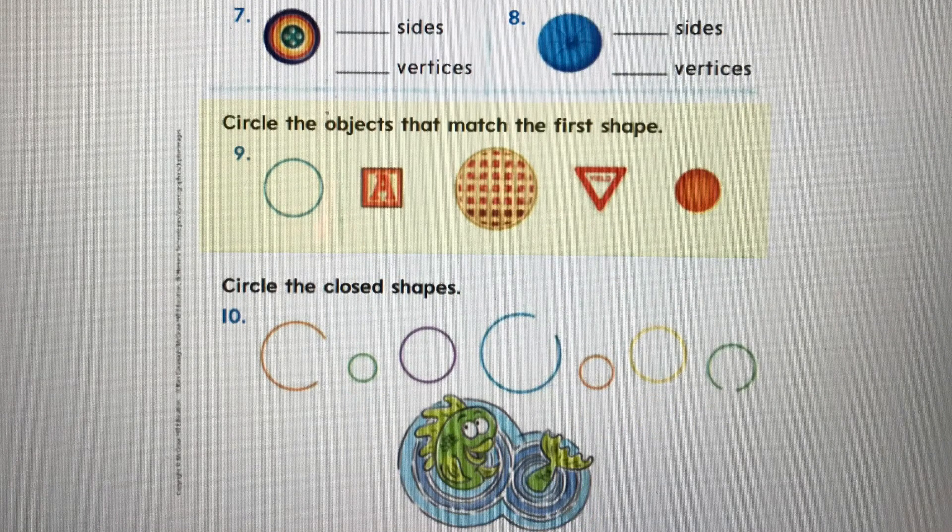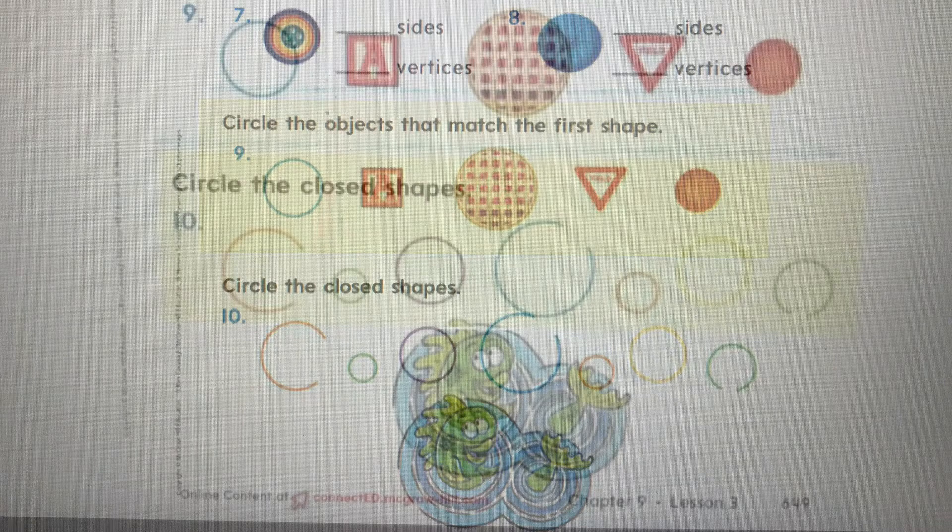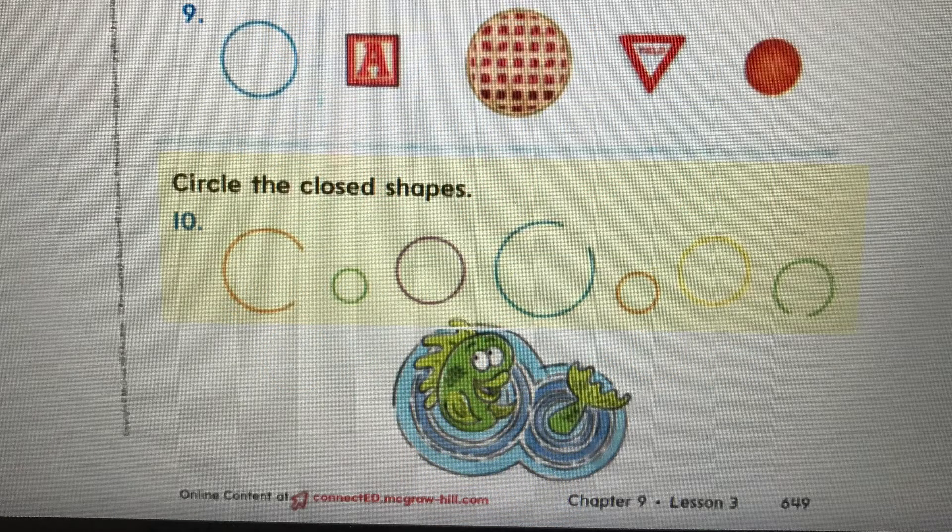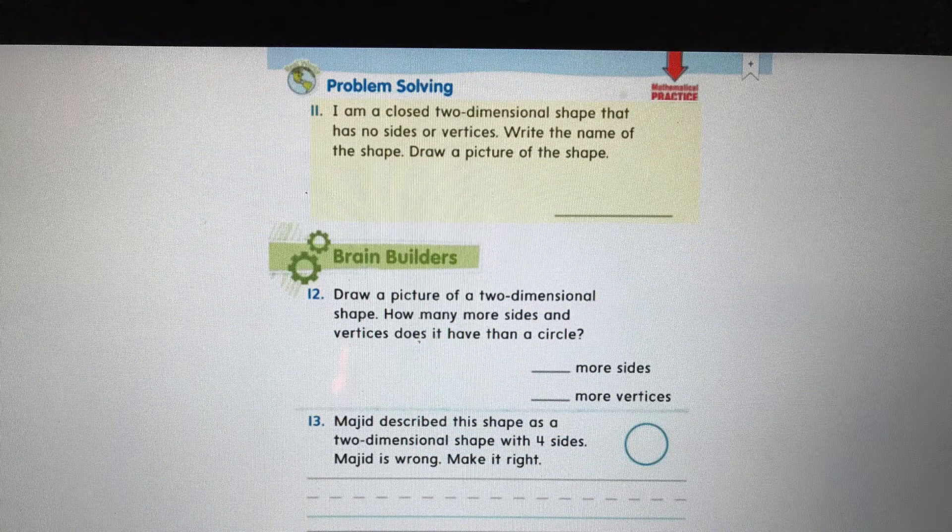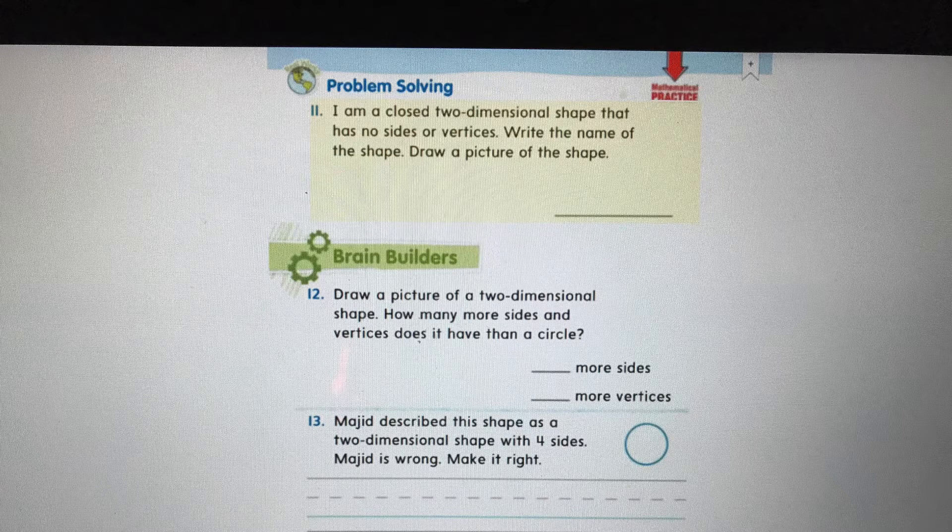Problem nine says, circle the objects that match the first shape. Well, the first shape in problem nine is a circle. Look at all those different shapes. Use your pencil and circle any of the other shapes that look like a circle, too. Problem ten, circle the closed shapes. So you can see all the shapes that are located above the fish. I want you to go through those shapes and only use your pencil to circle the shapes that are closed. So if you think about the shape we've learned today, that's going to help you, you can go back to find out how to spell it.